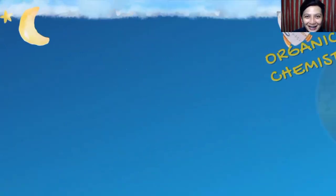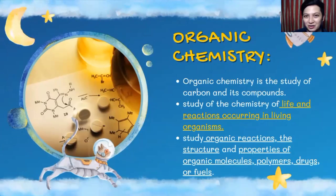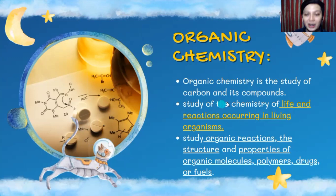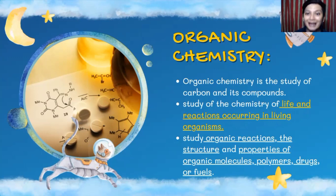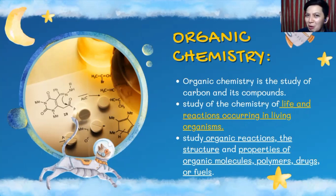Let's begin with organic chemistry. From the word itself, and as you can see in the pictures here, organic chemistry is the study of carbon and its compounds — the study of the chemistry of life and reactions occurring in living organisms. So when we are talking about carbon atoms and living organisms, that's what organic chemistry is all about. When you hear the word organic, it talks about living things.